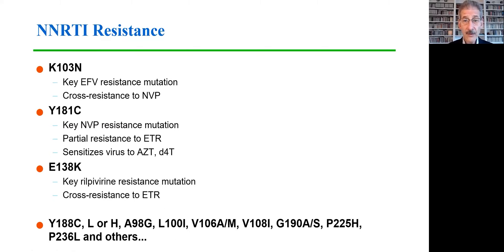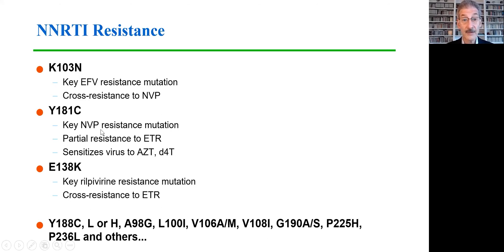There are now quite a large number of mutations that have been described that confer resistance to the various NNRTIs. The key resistance mutation for efavirenz is typically the K103N mutation, and the key nevirapine resistance mutation is typically Y181C — a mutation that also sensitizes the virus to zidovudine and to stavudine, a drug we no longer use, and confers partial resistance to etravirine.